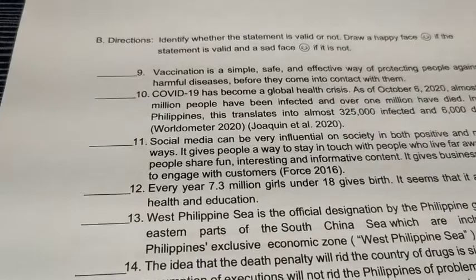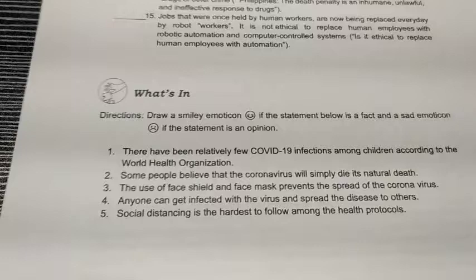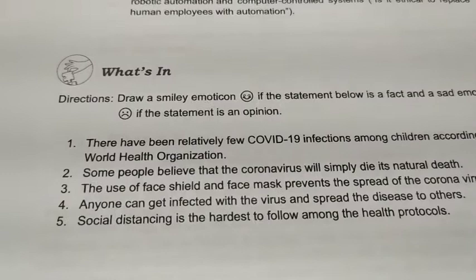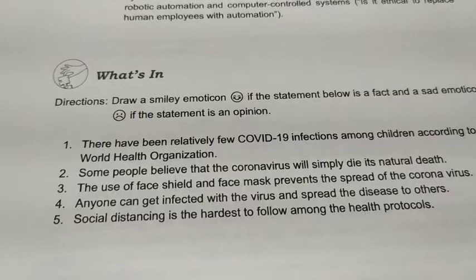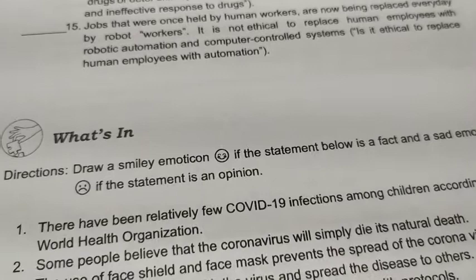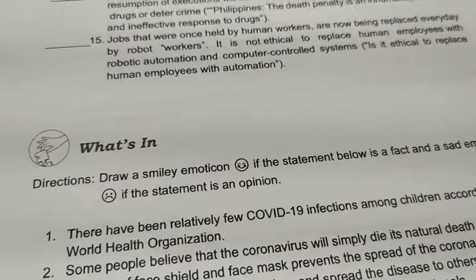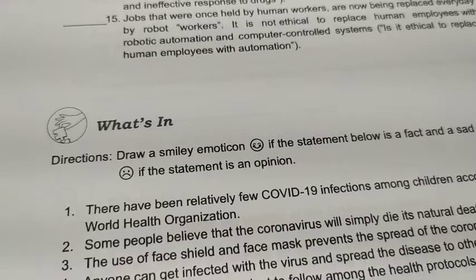So it's numbers 9 to 15. For 'What's In,' almost the same direction as the previous activity — draw a smile emoticon if the statement is a fact, then a sad emoticon if the statement is an opinion. When we say fact, it means all of the statements are correct. But when we say opinion, it might be true to you but not for other people, meaning it is not universal.